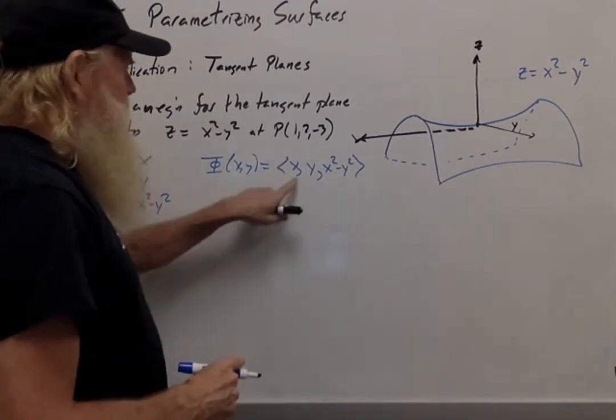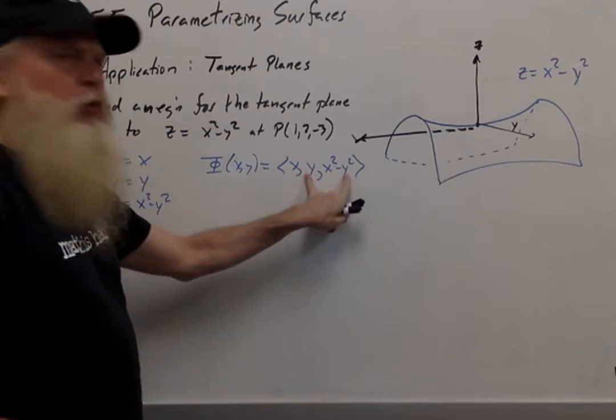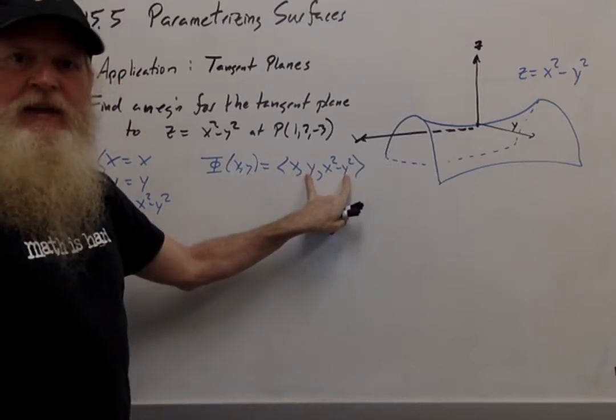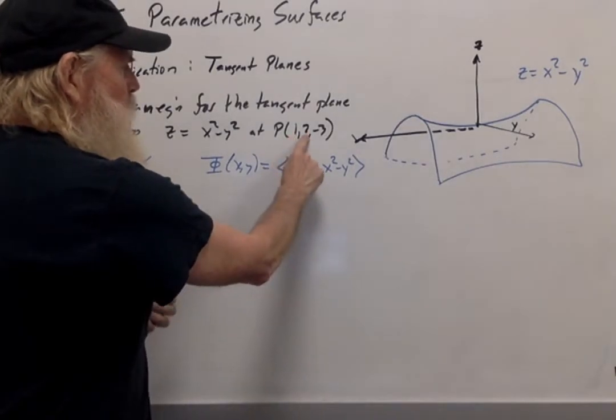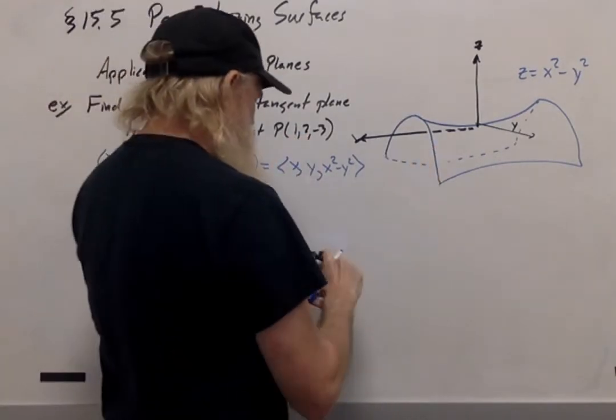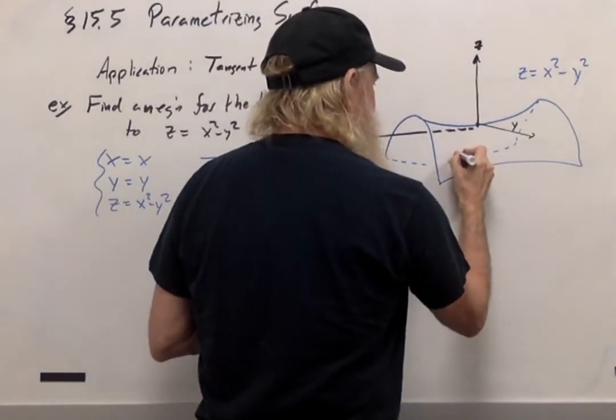Now let's think about what happens as I use this parametrization. Let's say that I held y fixed and let x vary. So for example, when x equals 1 and y equals 2, I'm at the point (1, 2, -3). Let's say that's here on the graph.